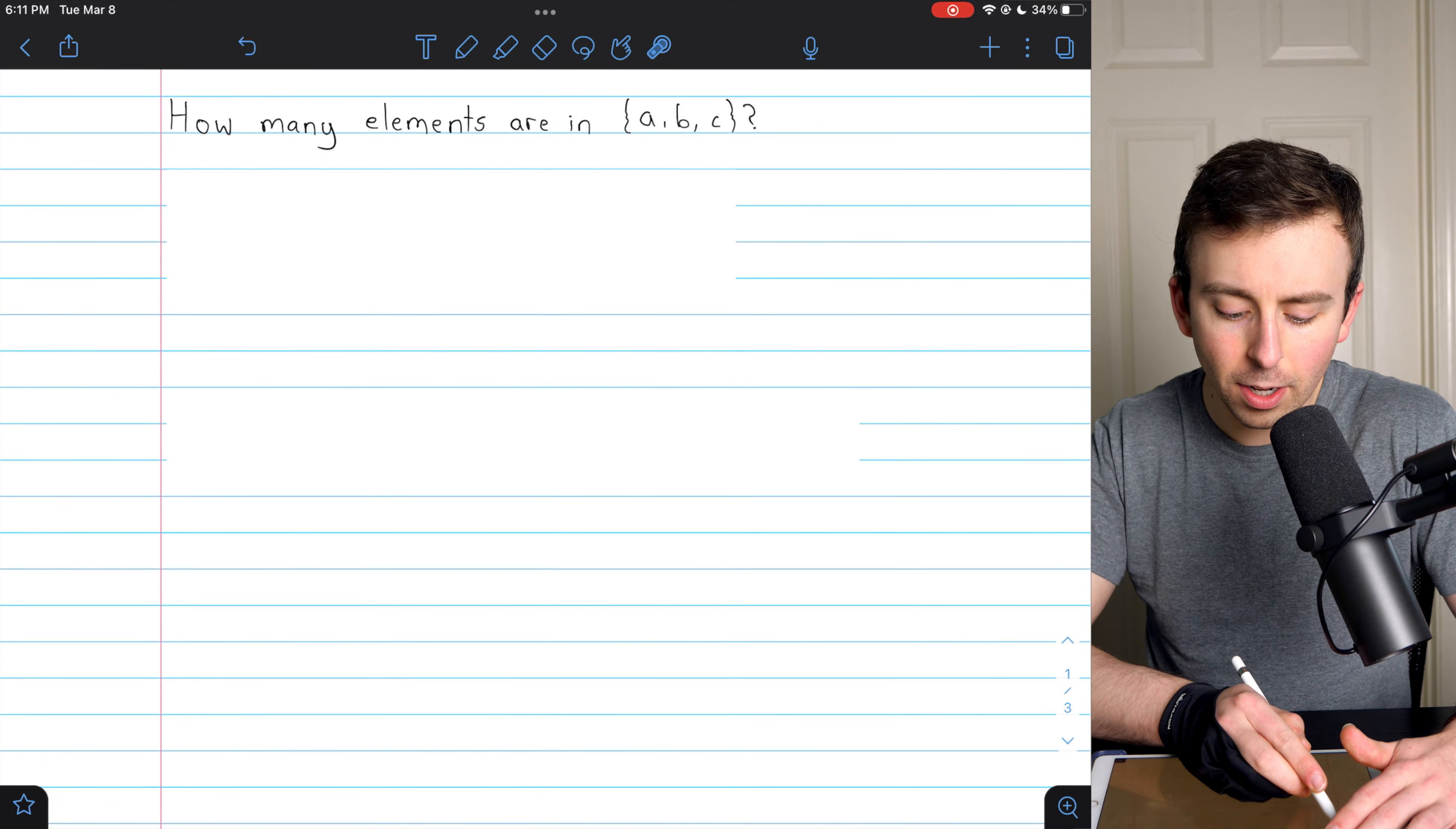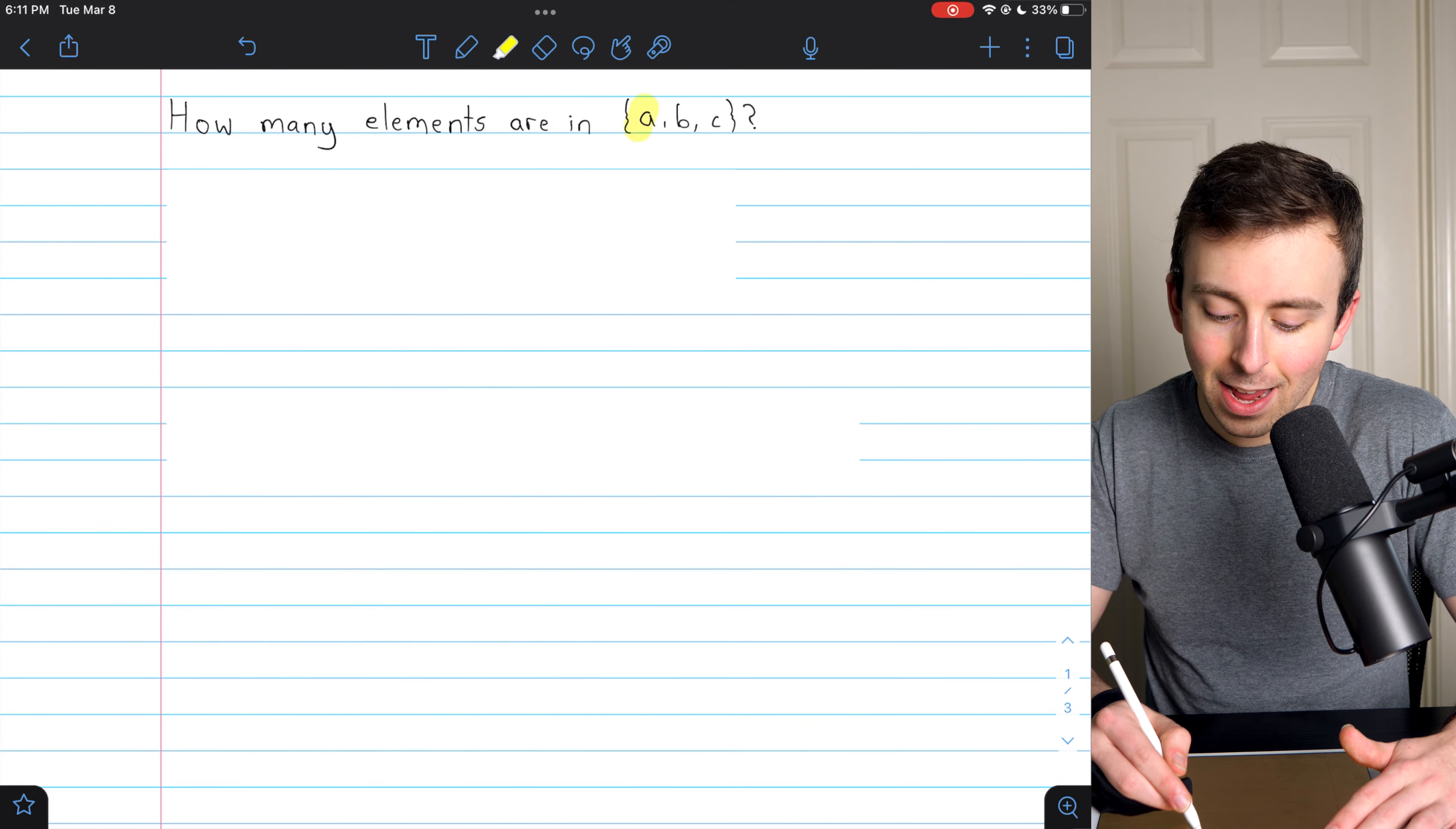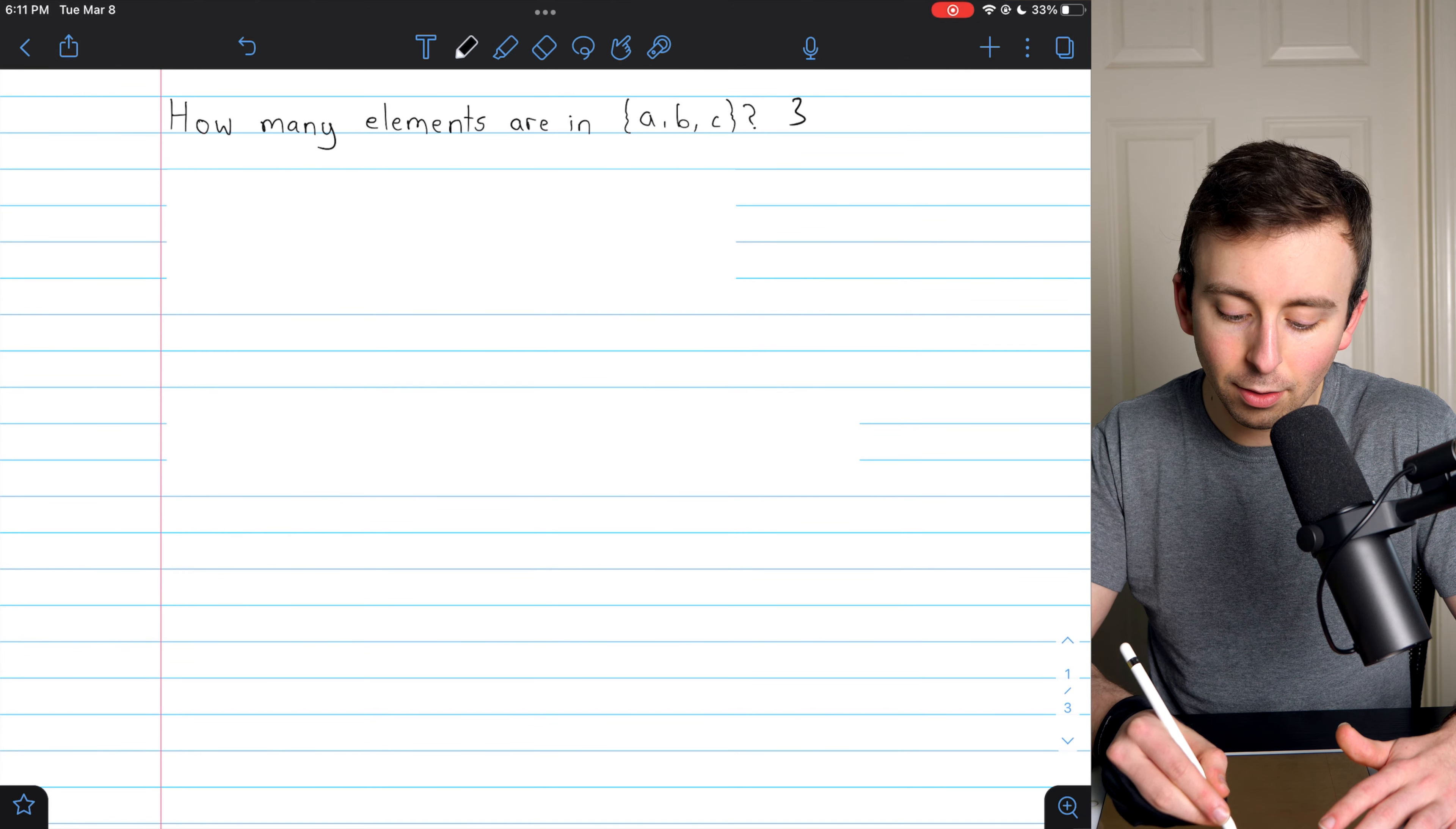Here's a basic question. How many elements are in this set? Easy. It has A, B, and C. So the set contains three elements. The answer to the question is three.